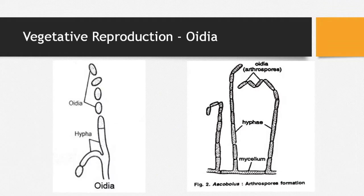The third example is oidia. In many different species such as Ascobolus and Arthrospores, a main hypha breaks at the tip into small, round segments called oidia. These oidia germinate and help form a new hypha. In the case of Ascobolus they are called oidia, while in other species they are called arthrospores. Their shape is a little different — they are segments that, when separated, form new hyphae. This method of vegetative reproduction occurs in many different species.